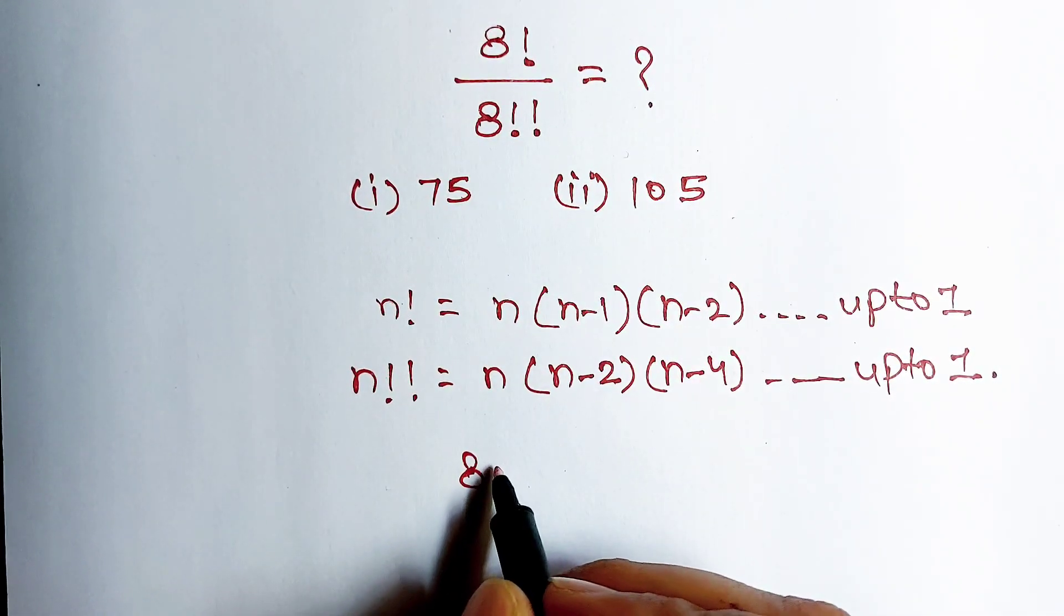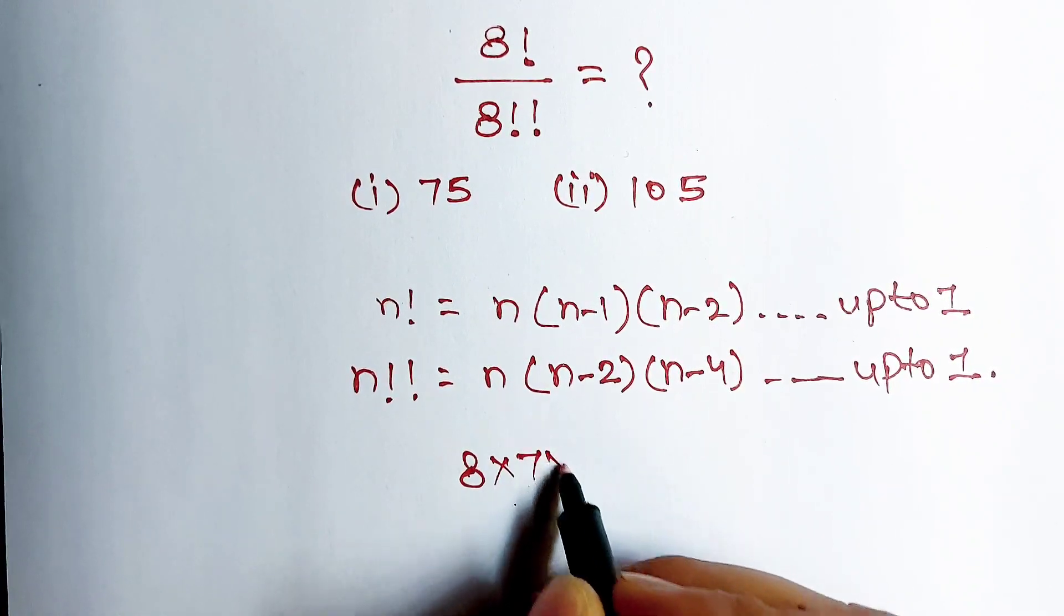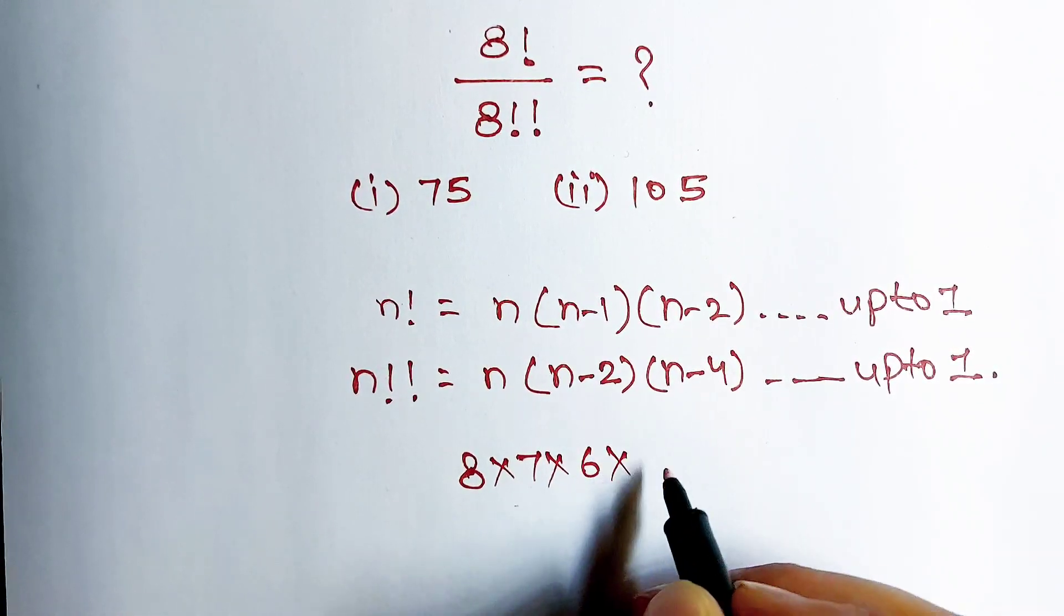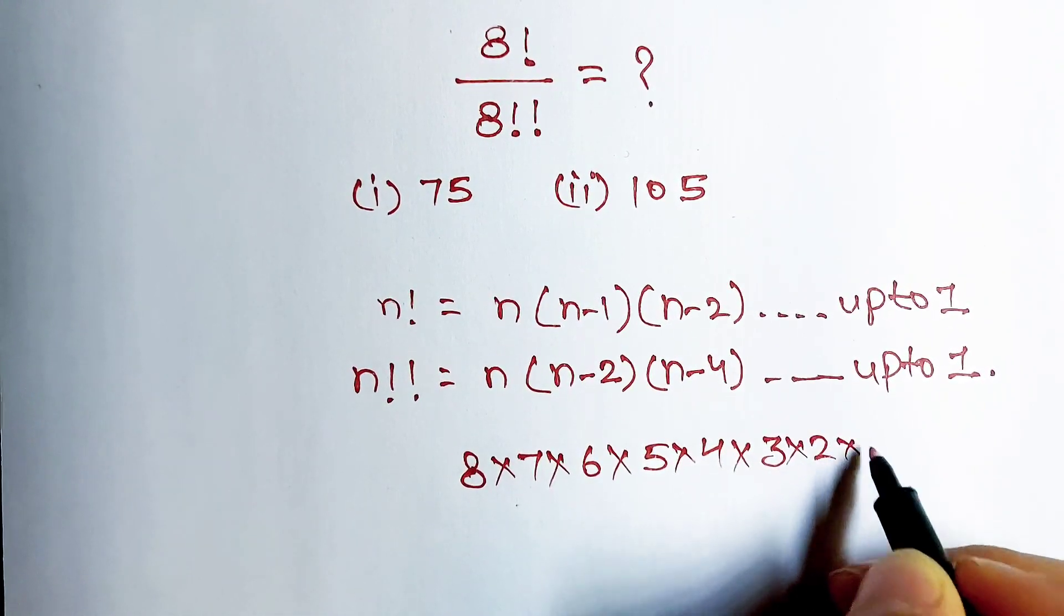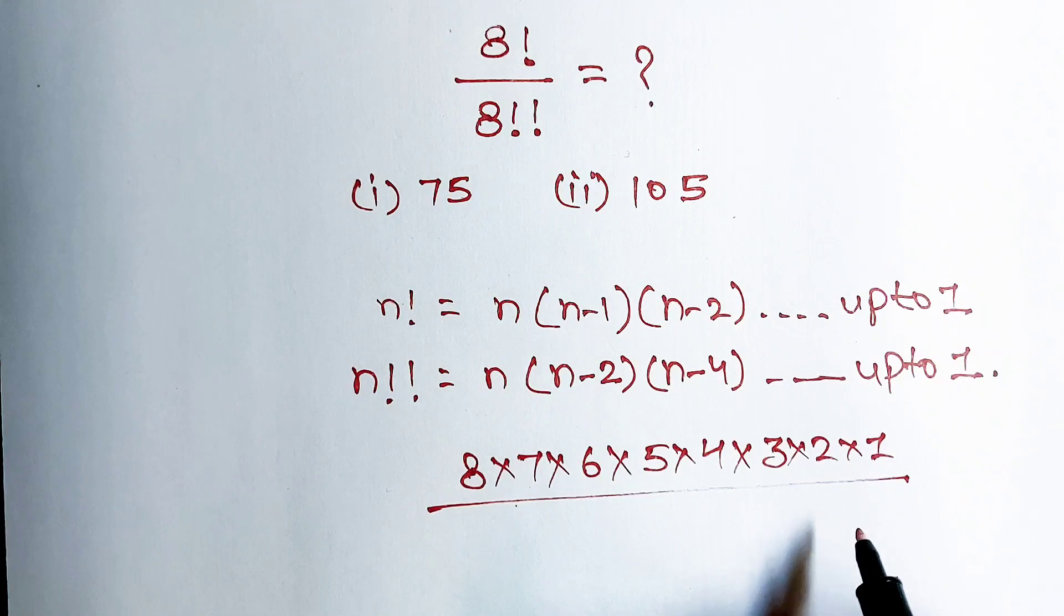Now this 8 factorial can be written as 8 multiply 7 multiply 6 multiply 5 multiply 4 multiply 3 multiply 2 multiply 1.